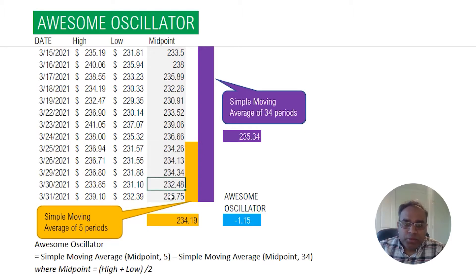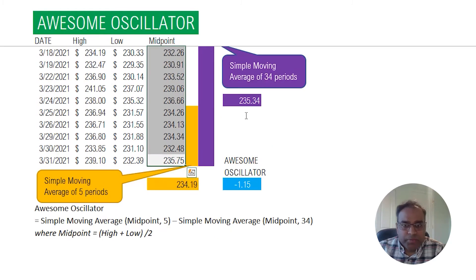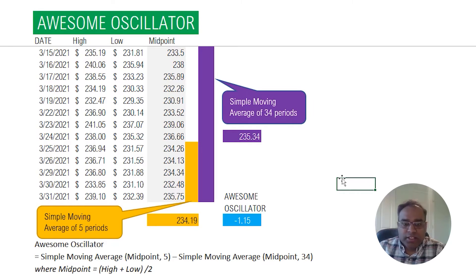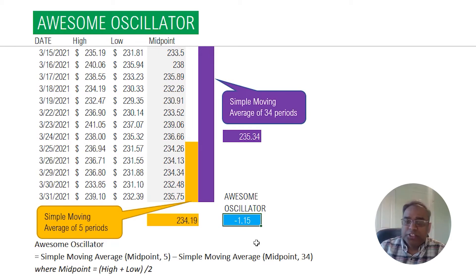Then we also calculate the simple moving average for 34 periods. The simple moving average of five periods reflects the more recent trend, and the simple moving average of 34 periods represents a longer trend. If you take the difference, that is the awesome oscillator value. In this case, the 5-period SMA is 234 and the 34-period SMA is 235.34, so the difference is negative minus 1.15. As indicated, it's an oscillator — it oscillates above and below the zero line. It's negative 1.15 because the moving average for the longer window was higher and the shorter window is lower, indicating a negative directional trend.